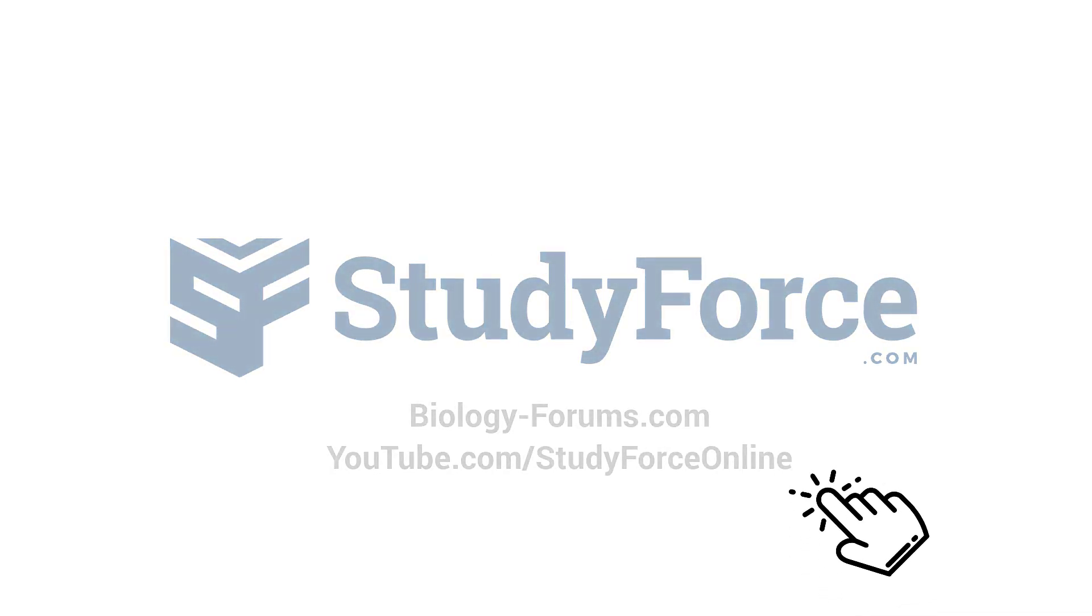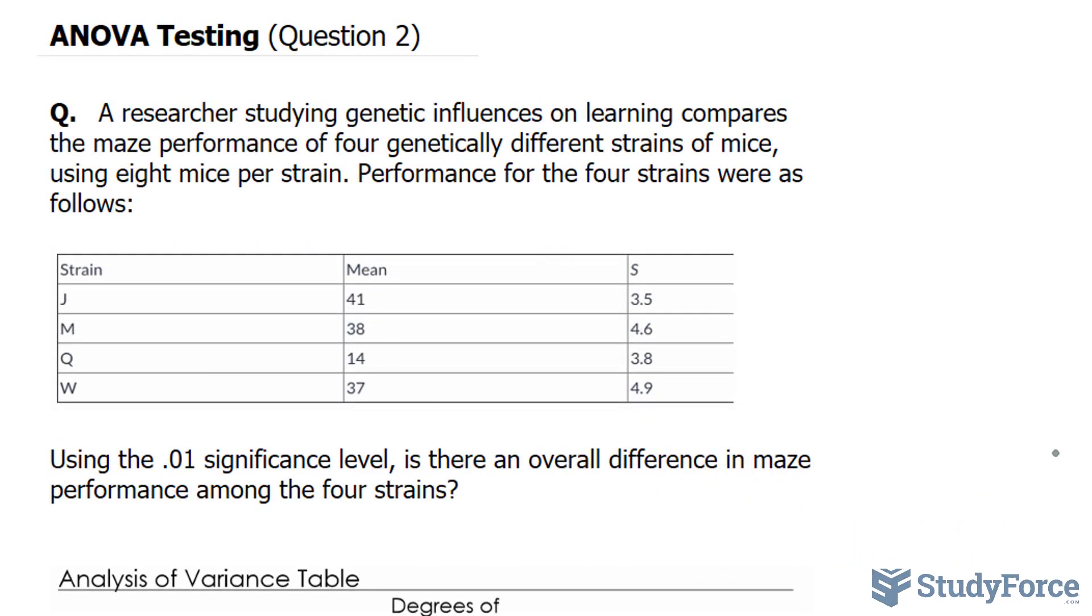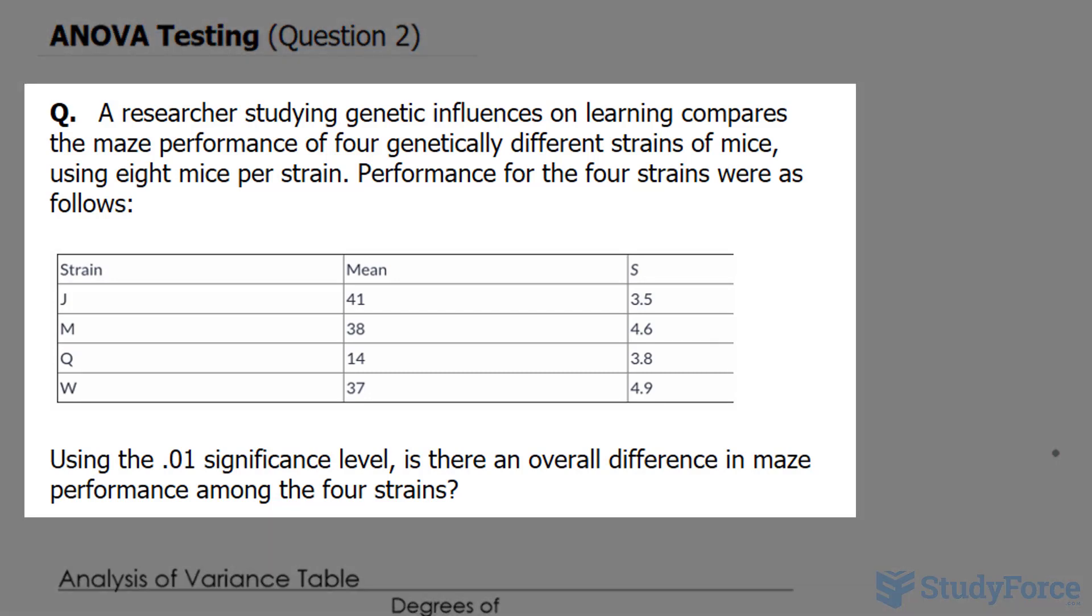In this lesson, I'll show you how to perform the ANOVA test when you're only given the mean and standard deviation. The question reads, a researcher studying genetic influences on learning compares the maze performance of four genetically different strains of mice, using eight mice per strain. Performance for the four strains were as follows.